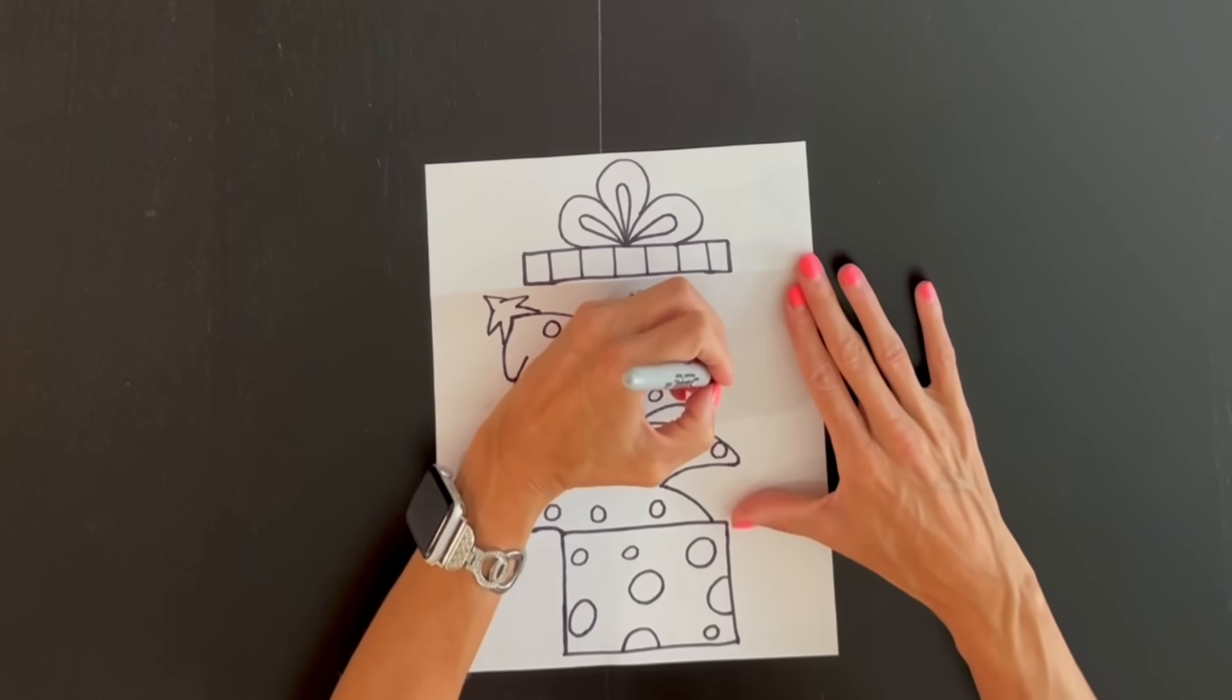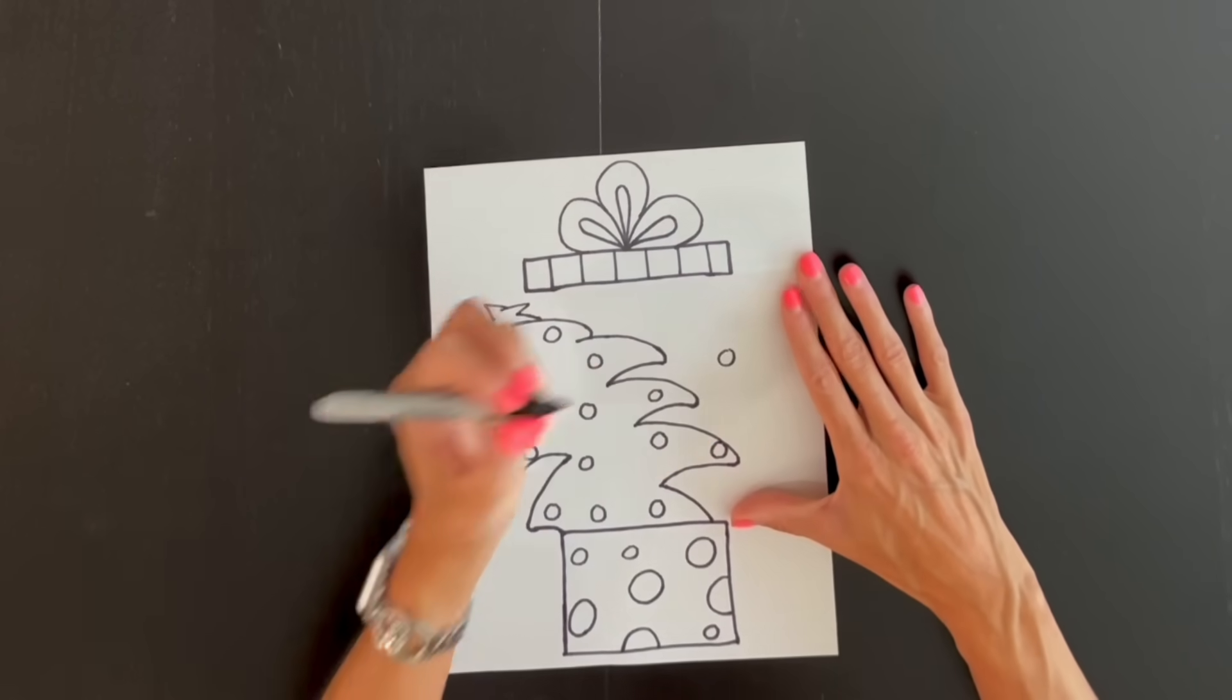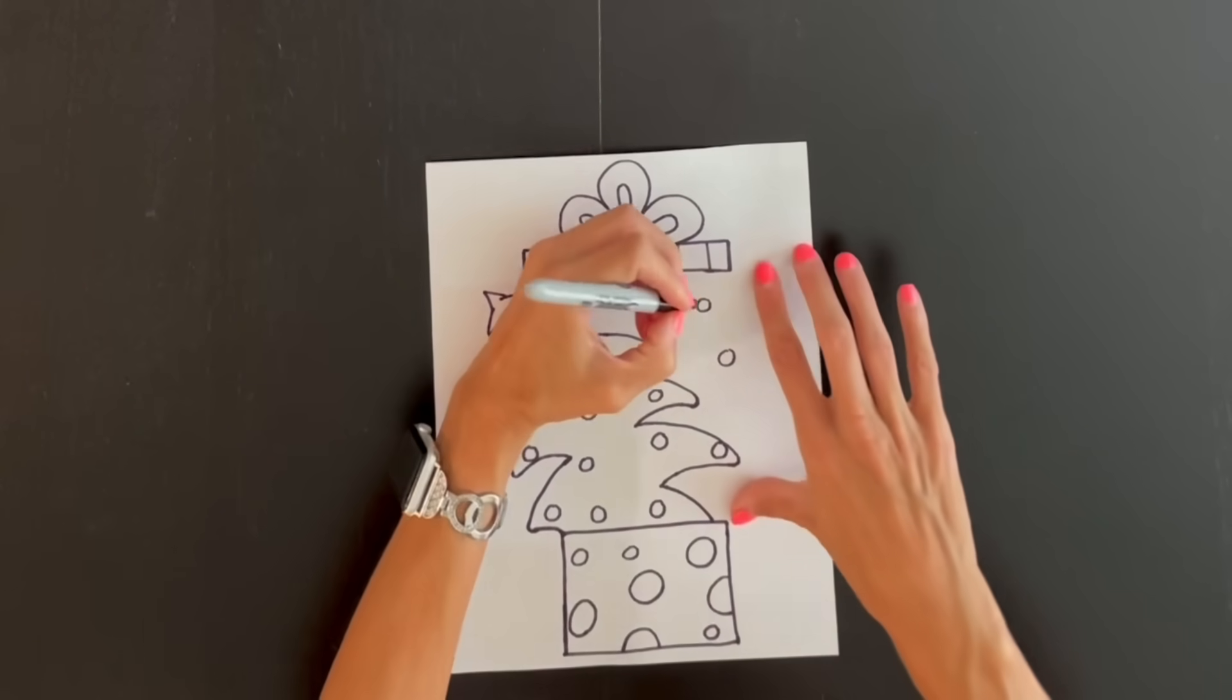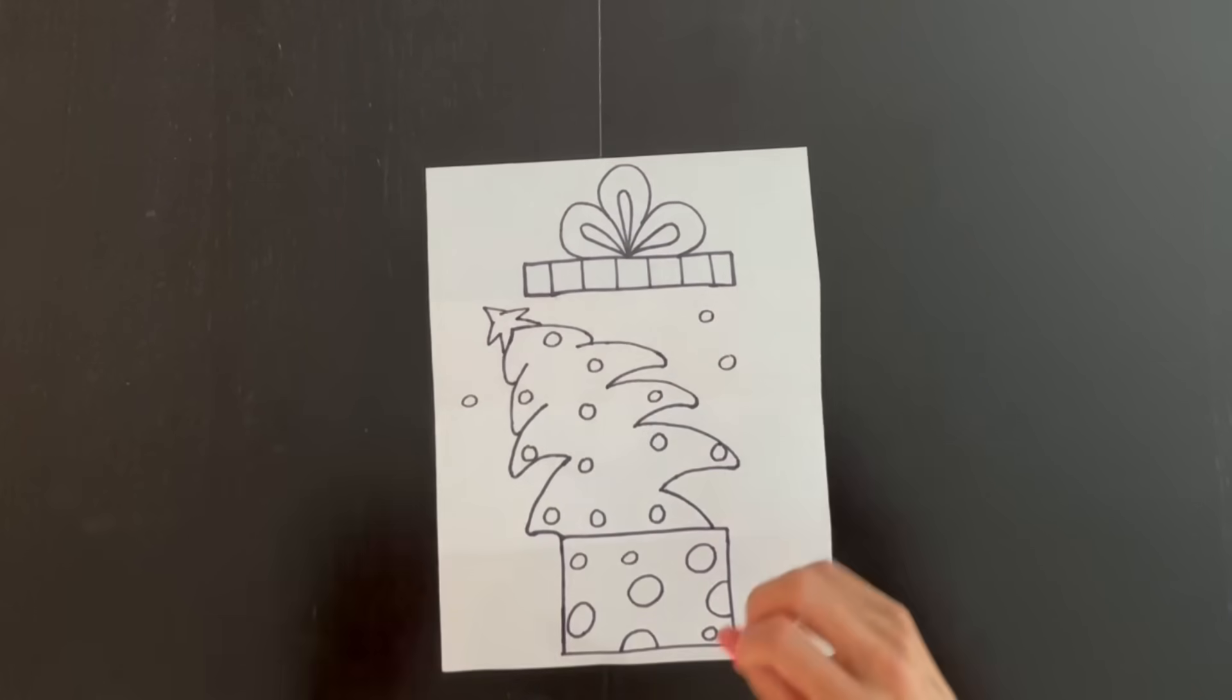Now over here, I'm going to draw a circle. And a circle. Make sure they stay below the fold. And I'm going to draw one over here too. So a couple ornaments are flying off the tree as it pops out of the box.